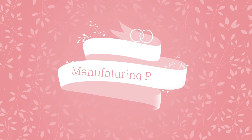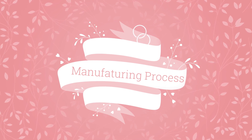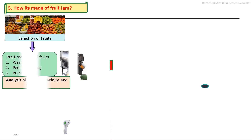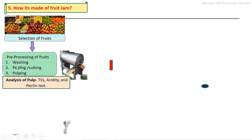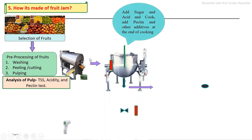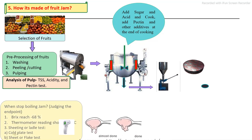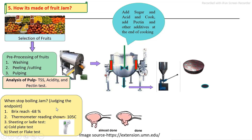What are the main steps in the manufacturing of jam? First, selection of fruits — properly ripe fruits are selected. Then pre-processing steps are carried out. After pre-processing, extraction of pulp and juice is done, and its taste, acidity and pectin content are checked. Then preparation of jam using steam-jacketed kettles: the fruit pulp is taken into the steam-jacketed kettles, other ingredients are added and properly cooked. After cooking, the end point is judged using different methods — brix method, thermometer, and traditional methods.